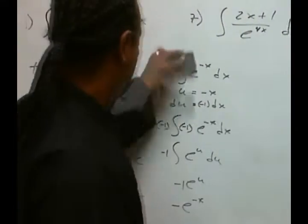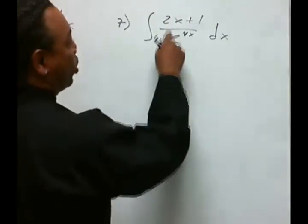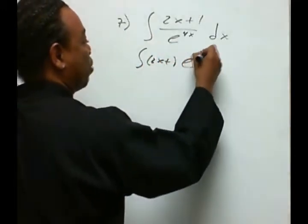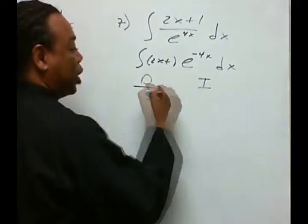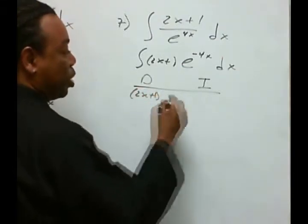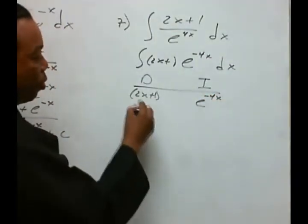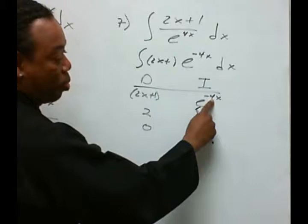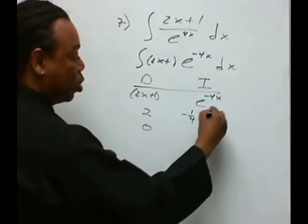Okay, next one, number 7. We're going to take this apart a bit and have it as 2x plus 1 times e to the negative 4x dx. We'll have a portion for derivative, the other portion for anti-derivative. We'll take the 2x plus 1 for the derivative, and e to the negative 4x for the anti-derivative. The derivative of this will be first 2 and then 0. The anti-derivative will have the reciprocal of the derivative, as we did before, which will be negative 1 fourth, e to the negative 4x.